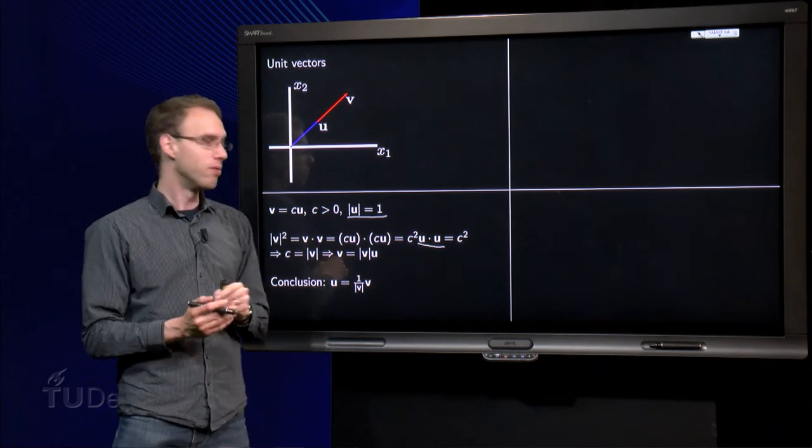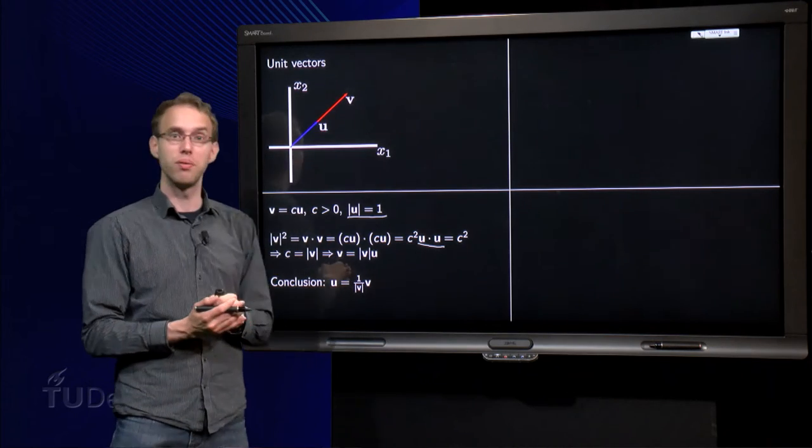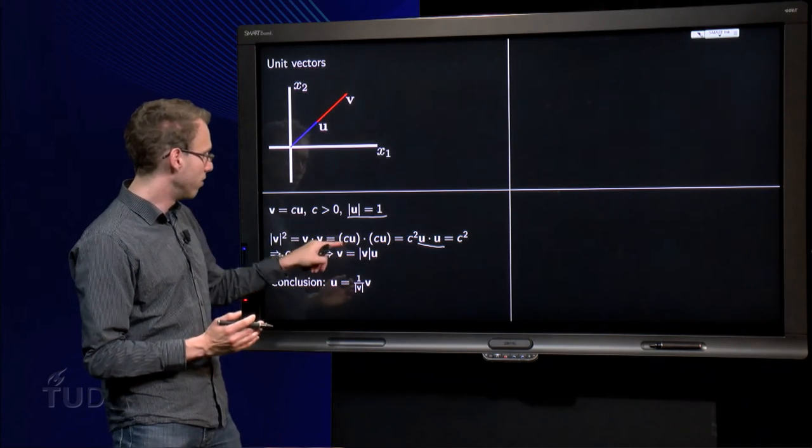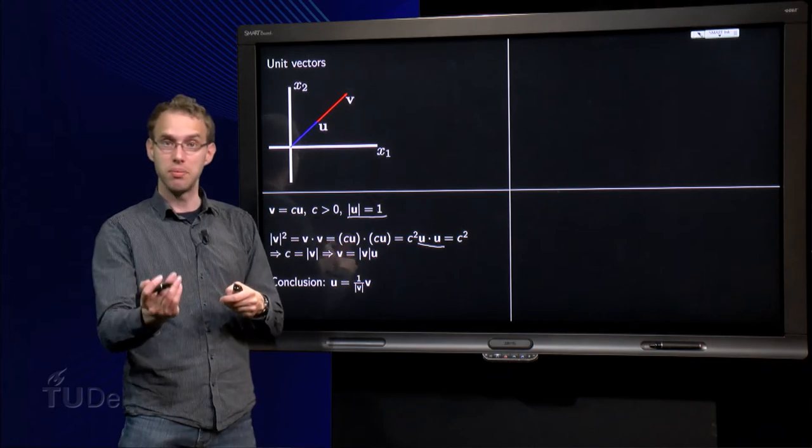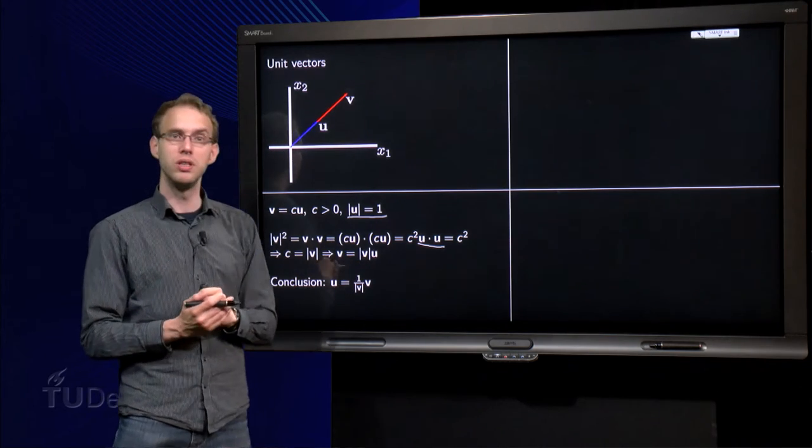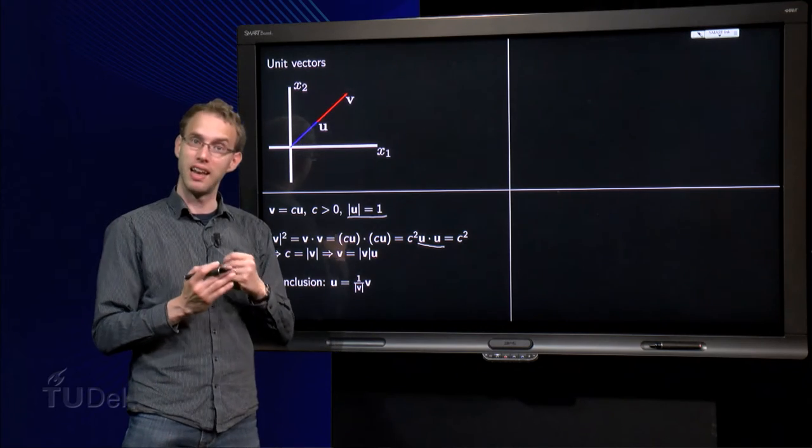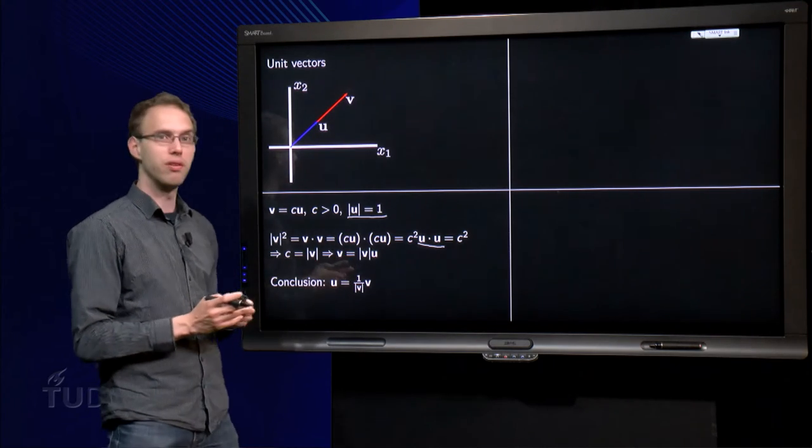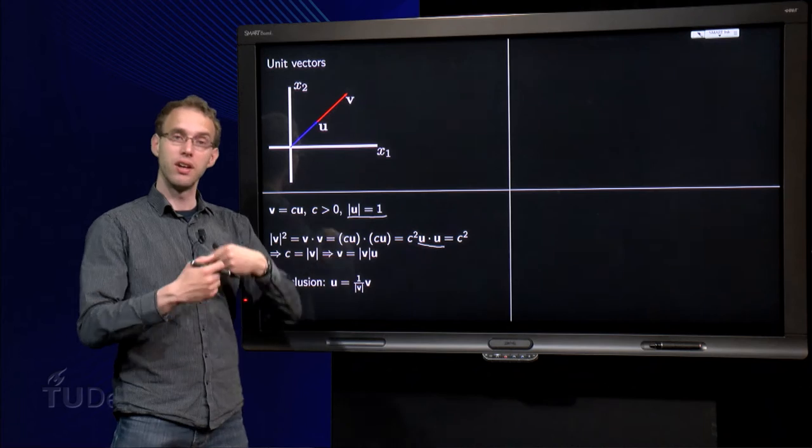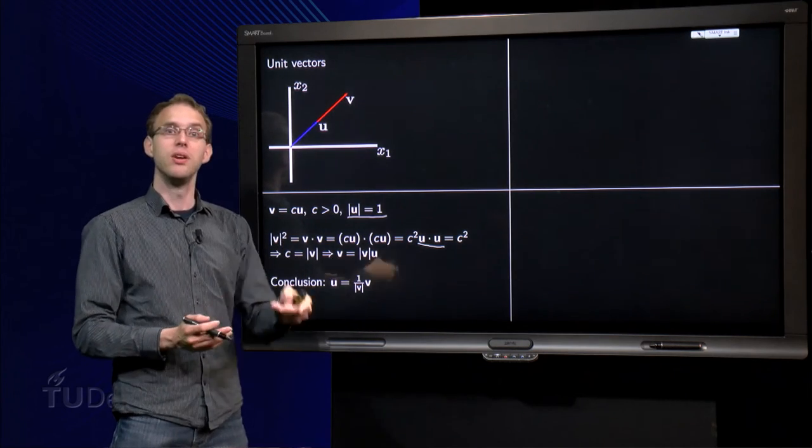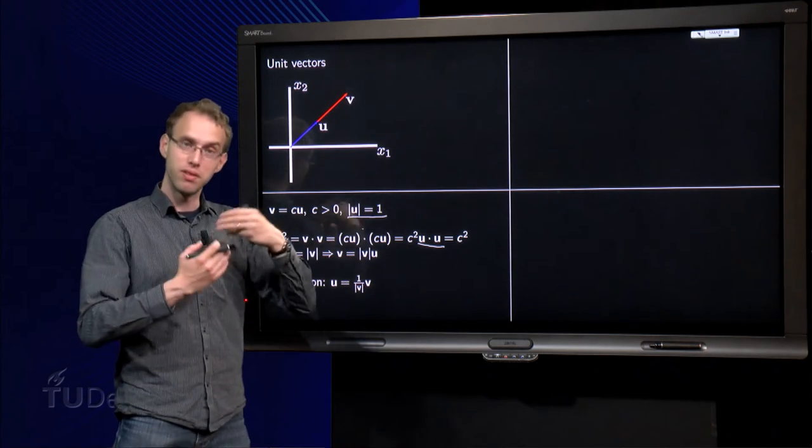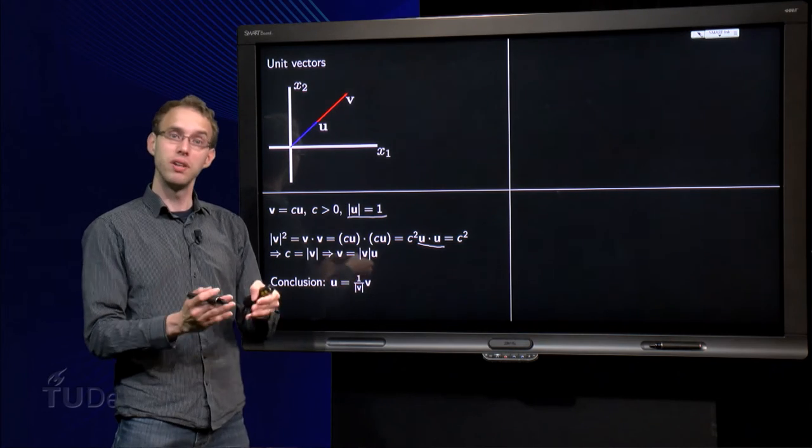So now we know c, which means that we can eliminate c from this equation over here. So we get v equals the length of v times vector u. So conclusion, vector u equals vector v divided by its length. So that is how you can find unit vectors: you have some arbitrary vector v, you divide by its length, you have a vector in the same direction still, but now with length 1.